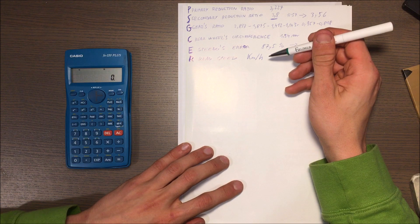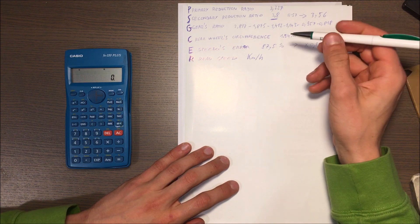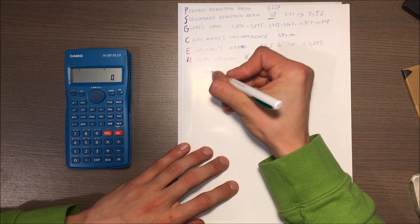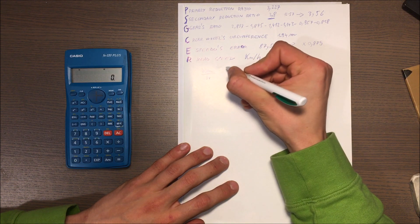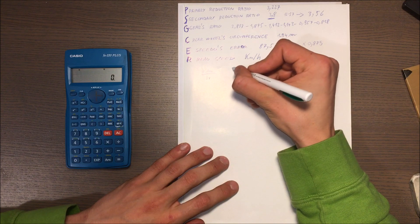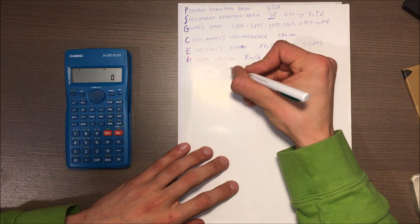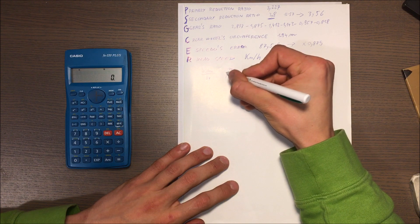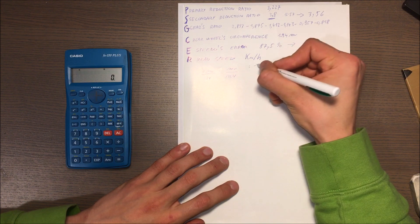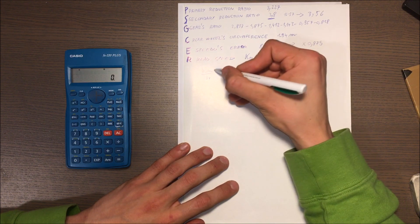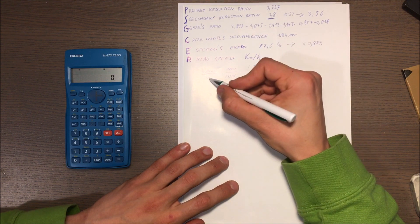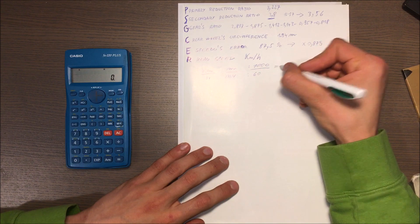Because we want to have the RPM, which are the rotations per minute. Kilometers per hour means that if we want to have the meters and the minutes, we have to divide by 1000 the kilometers and we have to divide by 60 the hours.